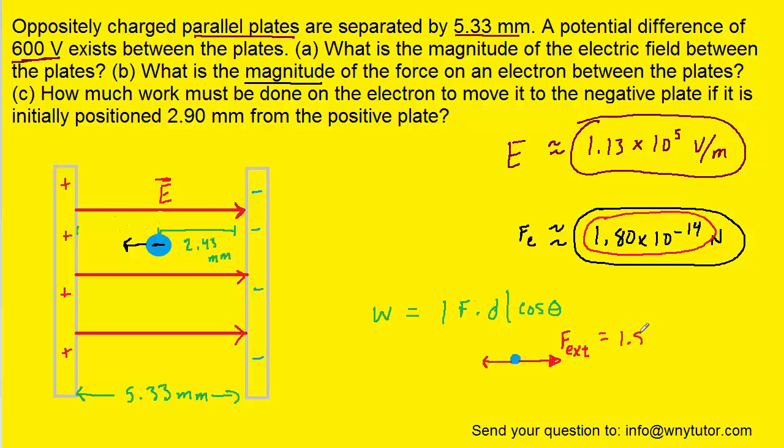And that has to equal 1.8 × 10^-14 Newtons. The reason we have to apply this external force is because we want to push the electron towards the negative plate, and the only way to do that is to apply that external force.